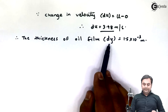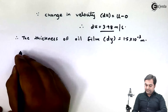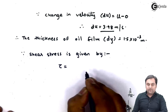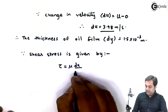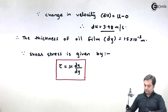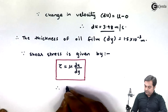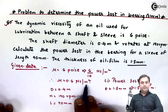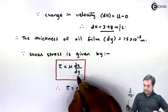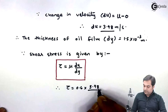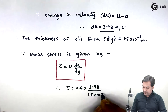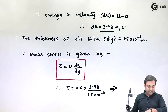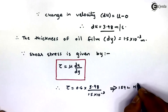After getting du and dy, I'll calculate shear stress. Shear stress is given by tau equals mu into du by dy. Substituting: mu is 0.6 Newton second per meter square, du is 3.98, and dy is 1.5 into 10 raised to minus 3. Calculating this gives shear stress tau equals 1592 Newton per meter square.